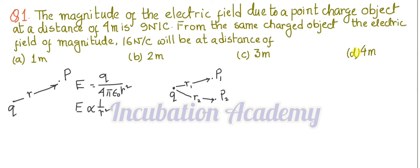Then we can write that the electric field at point P1 is E1 proportional to 1 by R1 square, and the electric field at point P2 is E2 proportional to 1 by R2 square.